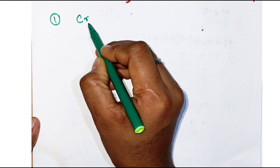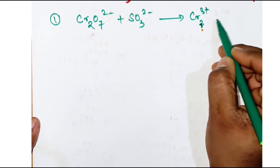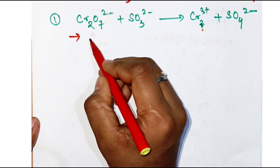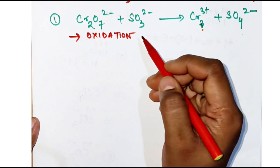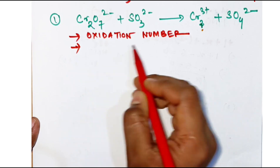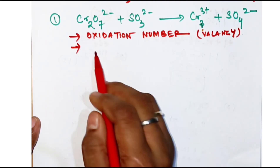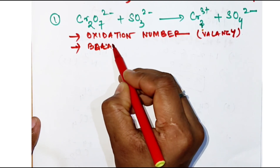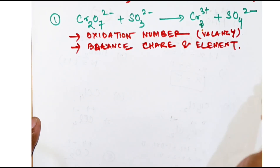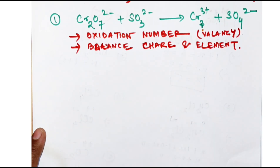The first reaction we are solving is Cr₂O₇²⁻ plus SO₃²⁻ giving Cr³⁺ and SO₄²⁻. For balancing a chemical equation we need the oxidation number — I have discussed oxidation numbers in detail in another video, so please check that. We will balance elements and charge. Both reduction and oxidation are taking place, so these are called redox reactions.